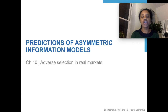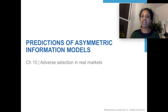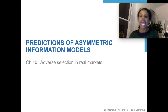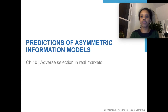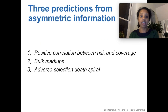Asymmetric information is when the consumer has more information about their risks than the insurance company is able to accurately observe. And that can become a problem for insurance companies because they need to match what they're receiving in premiums to what they're going to be paying out in benefits.